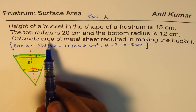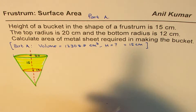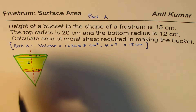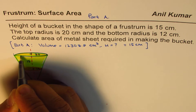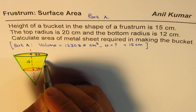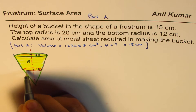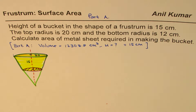Now we want to calculate the area of the metal sheet required in making the bucket. When we say area of metal sheet required, we mean the surface area — the outside area. That area includes the lateral surface and the bottom. That's the area which we need to calculate.